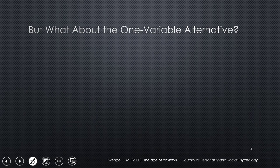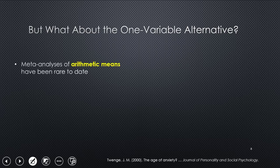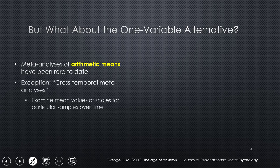So, but what about the one variable alternative? This is the one no one thinks about. And I'm going to argue in this talk that you might actually want to take advantage of this thing. Meta-analyses of arithmetic means have been rare today. So I'm going to give you a quick example.